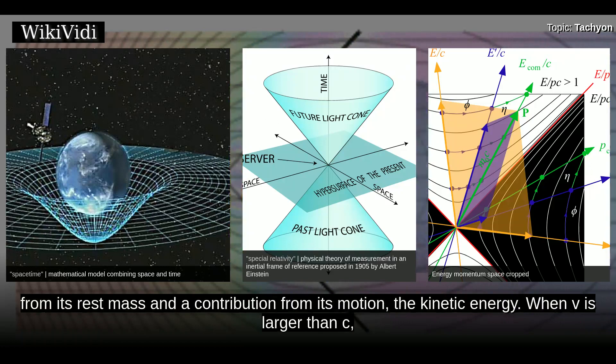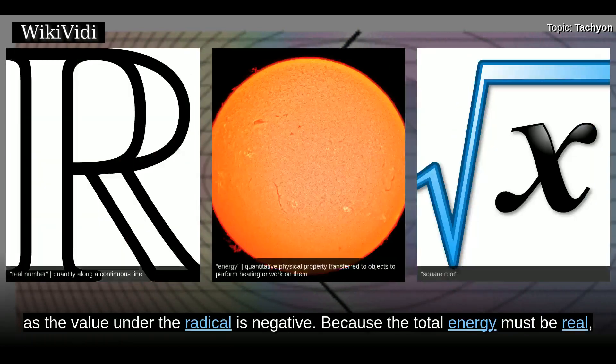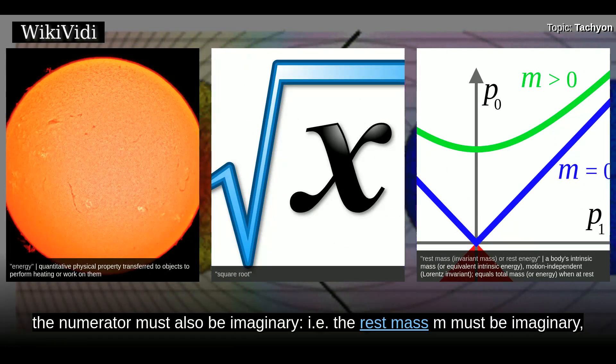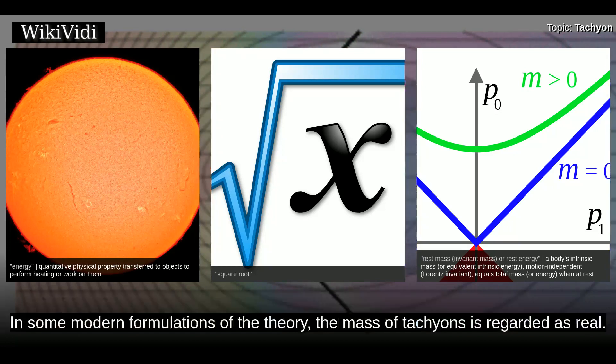When v is larger than c, the denominator in the equation for the energy is imaginary, as the value under the radical is negative. Because the total energy must be real, the numerator must also be imaginary. That is, the rest mass m must be imaginary, as a pure imaginary number divided by another number. In some modern formulations of the theory, the mass of tachyons is regarded as real.